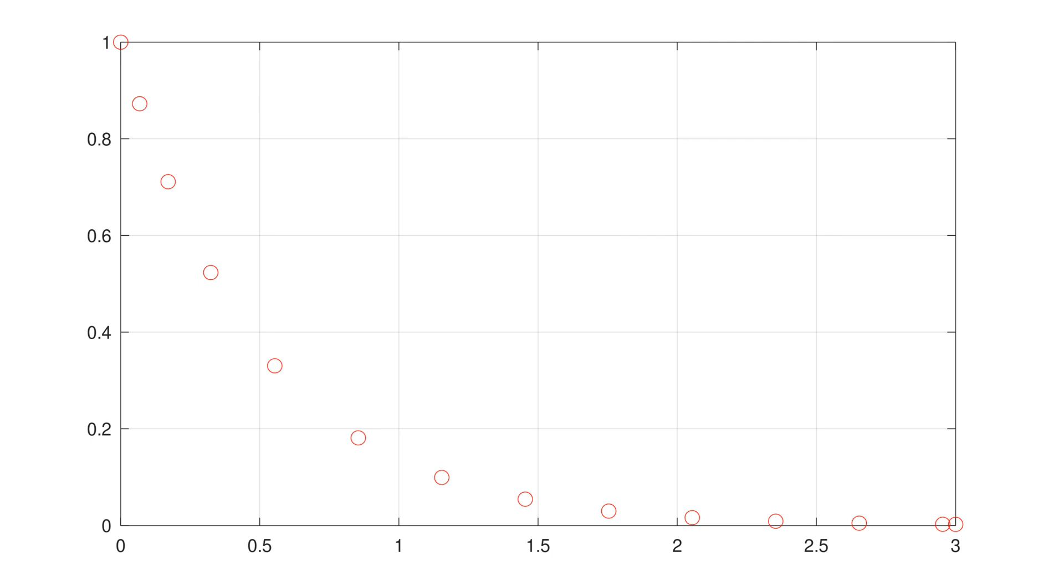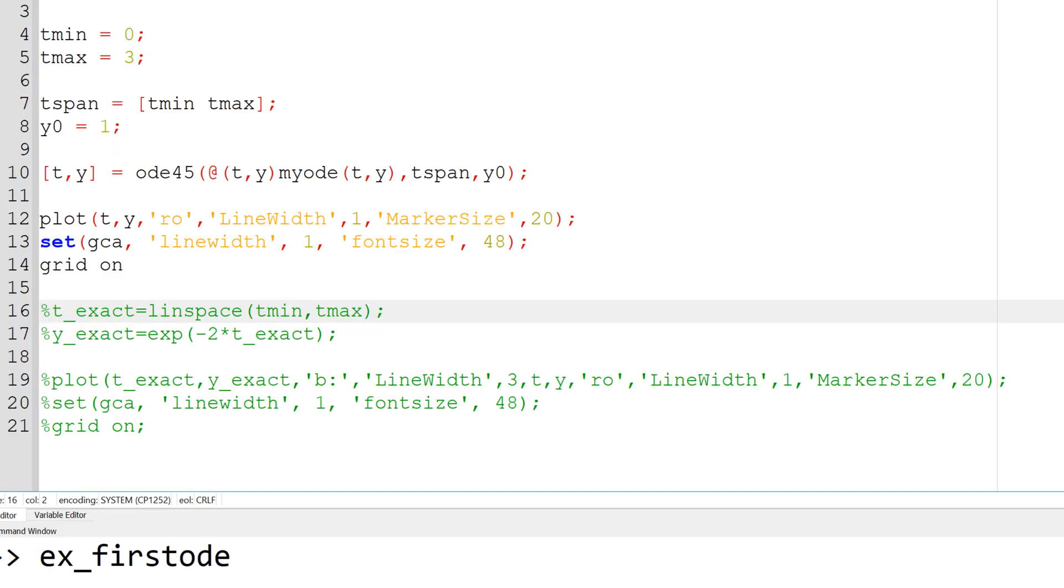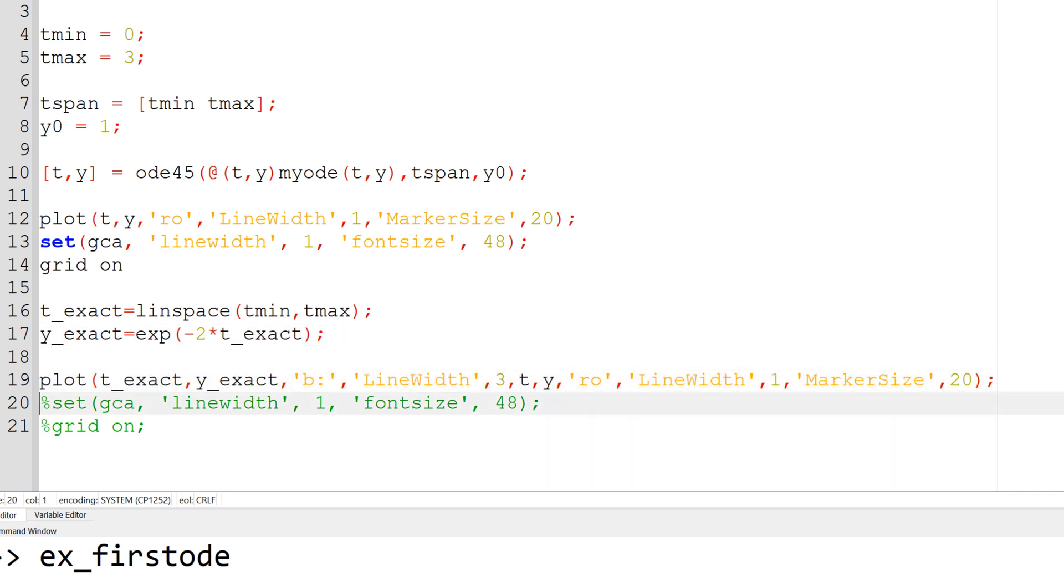To double check if this solution is reasonable, I would compare with the analytical solution y equals e to the power of minus 2t. You can create a separate row vector for the time with the same time range from 0 to 3, t_exact. And then create the y equals e to the power of minus 2t for the plot. You can add the analytical solution to the existing plot for the comparison.